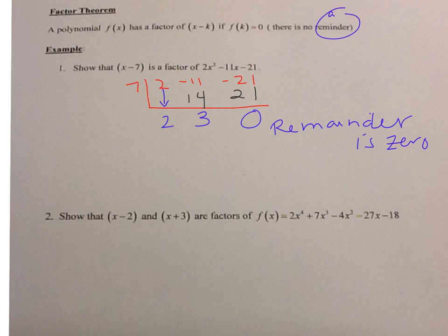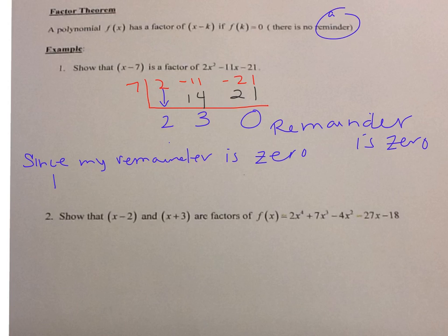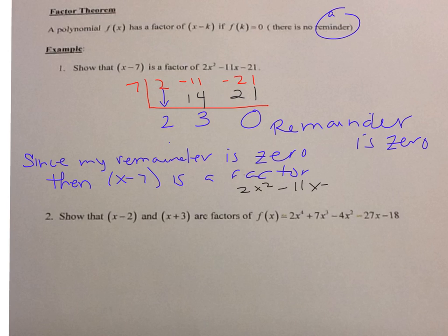When you have a remainder of 0, since my remainder is 0, then x minus 7 is a factor. And since that's a factor, if I take 2x squared minus 11x minus 21 and x minus 7 is a factor, I know my other factor is the polynomial from the synthetic division, which is 2x plus 3.